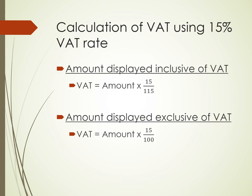Let's illustrate the calculation of VAT using a VAT rate of 15%. If an amount is displayed as inclusive of VAT, the VAT amount equals the amount times 15 divided by 115. Where an amount is exclusive of VAT, we still have to add VAT to get the final price the customer will pay. To calculate the VAT amount, you take the amount times 15 divided by 100 to get the VAT that is payable by the customer.